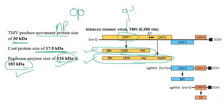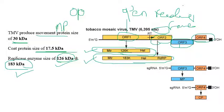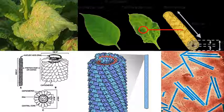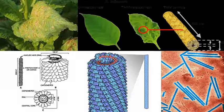TMV consists of four ORFs — four open reading frames. This is an important exam point: how many open reading frames are present in TMV? The answer is four. These are the first, second, third, and fourth open reading frames present in the TMV genome.